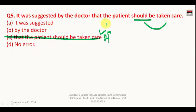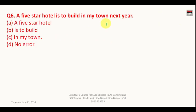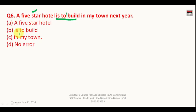Question number six: 'A five-star hotel is to build in my town next year.' The sentence intends to say the hotel is to be built by someone — it will not build itself. Therefore, it must be written in passive voice: 'A five-star hotel is to be built.' The phrase 'is to build' is wrong and must be replaced with 'is to be built.' The B part is wrong, and this is a very important sentence.